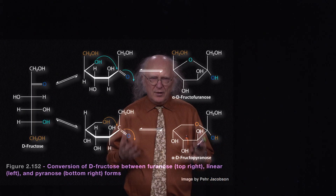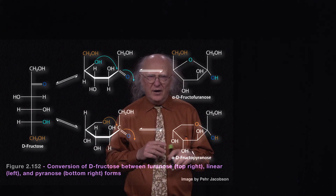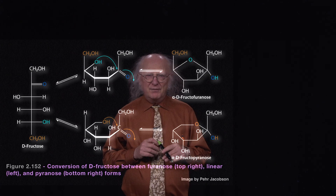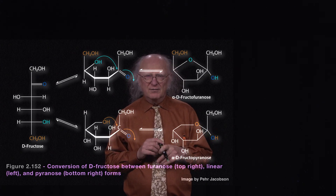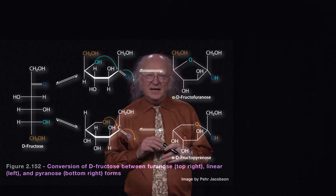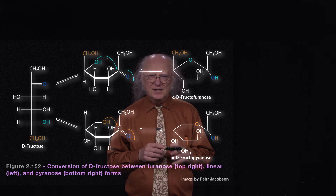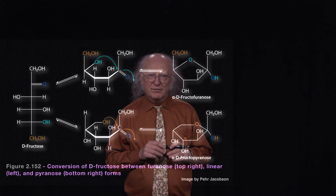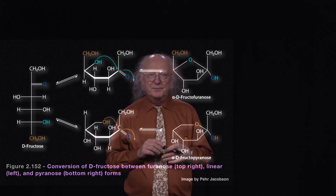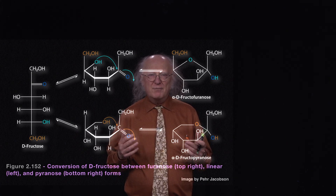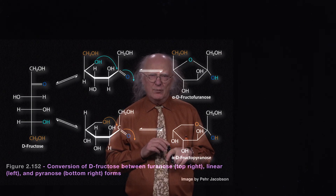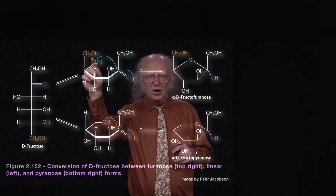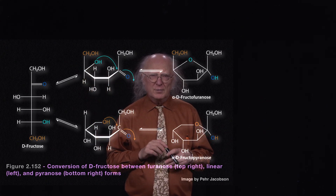This figure shows an important set of configurations a sugar can take. On the left, you see fructose in what's called a linear form, or the Fischer configuration. That Fischer configuration can change into a circular configuration we call Haworth. On the top, fructose is forming what we call the furanose form, where carbon number two forms an oxygen bridge with carbon number five. Furanose refers to five — a five-membered ring — but there are only four carbons in that ring, since fructose has six carbons total with two outside the ring.